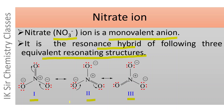All three resonating structures are equivalent in the following aspects. The nitrogen atom is tetravalent with one positive charge in all three resonating structures. One neutral oxygen atom is divalent, forms two covalent bonds with the nitrogen atom, and has two lone pairs of electrons. There are two negatively charged oxygen atoms which are monovalent, form one covalent bond with the nitrogen atom, and each contains three lone pairs of electrons.